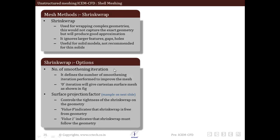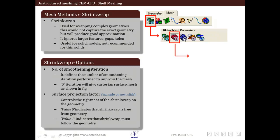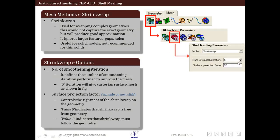First is the number of smoothening iterations. It defines the number of smoothening iterations performed to improve the mesh. We activate the shrink wrap mesh and give it settings by going into the mesh panel, selecting the method as shrink wrap, and then giving the number of smooth iterations. The number of smoothening iterations carries out repetitive operations trying to smoothen the surface mesh and trying to fit it or overlap it with the geometry considered.